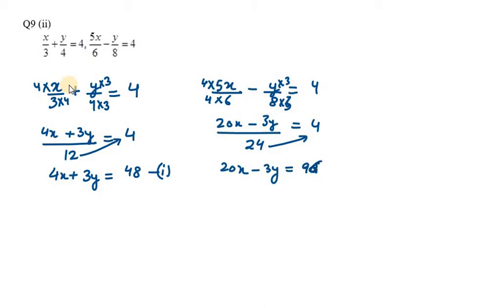Now I need to find the value of x and y. You can see in these two equations we have two same values: 3y and -3y. Therefore, it's better to use the elimination method because that would be very easy to do here. So 4x + 3y = 48...